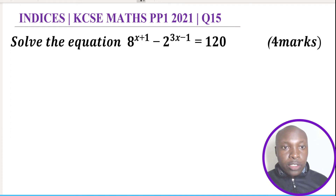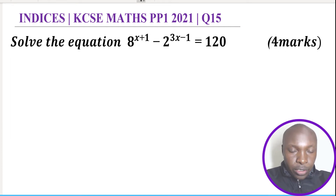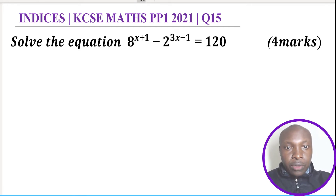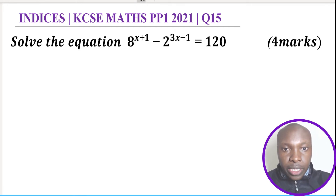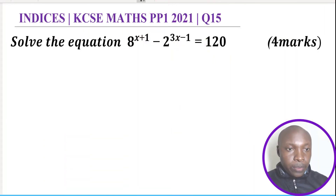Hello and welcome. Let us solve this question on indices. The equation is 8 to the power (x+1) subtract 2 to the power (3x-1) equals 120. Let us go straight to the solution.